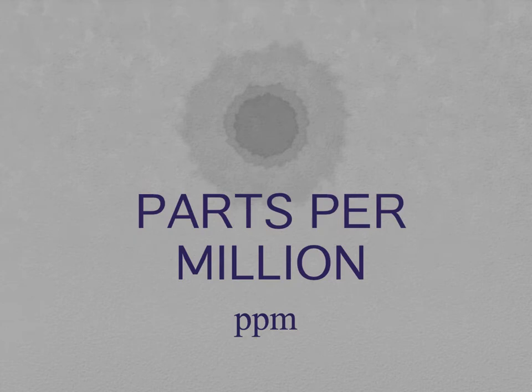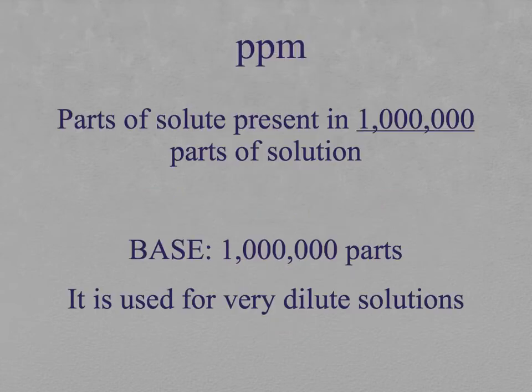Another way to express concentration is in parts per million. Just as percent means out of a hundred, parts per million means out of a million. The same explanation. Parts of solute present, but now in one million parts of the solution. It means that the base is one million parts. As you can imagine, it is used for dilute solutions.